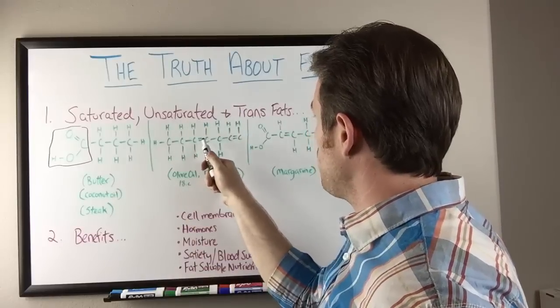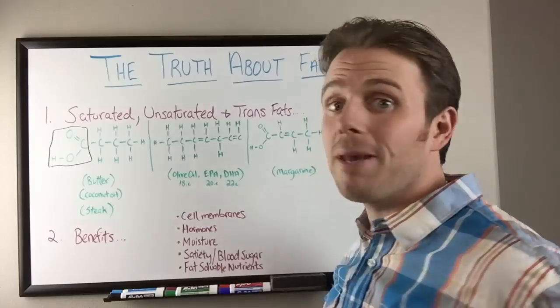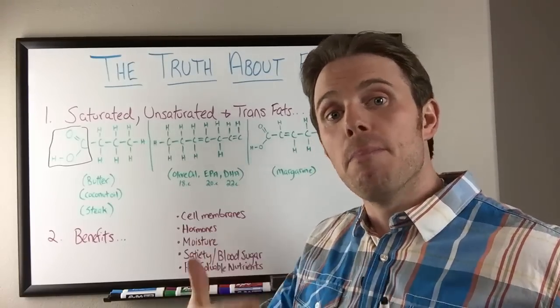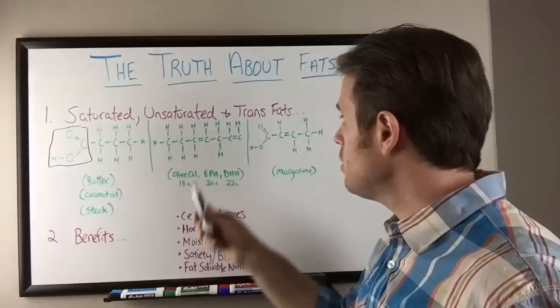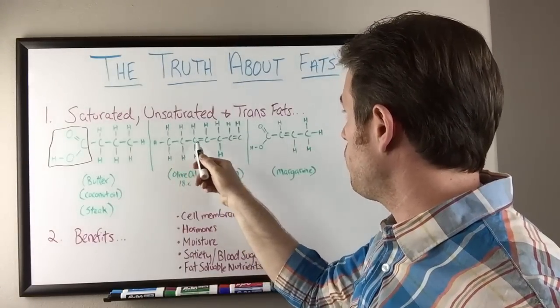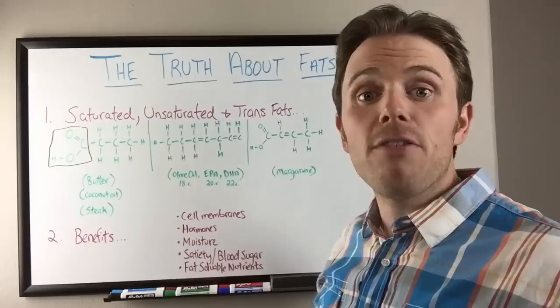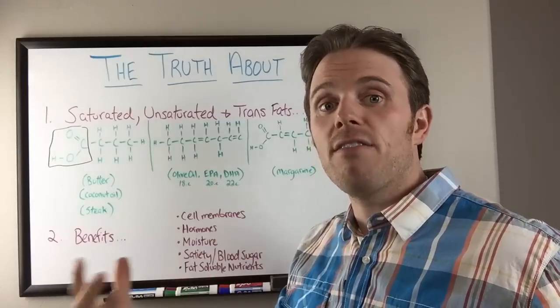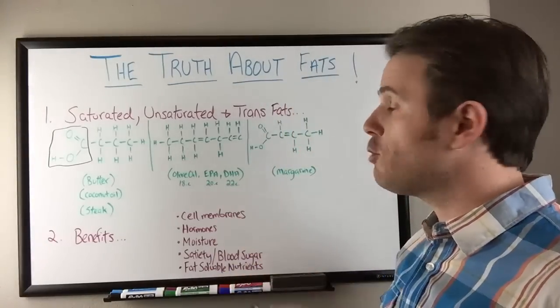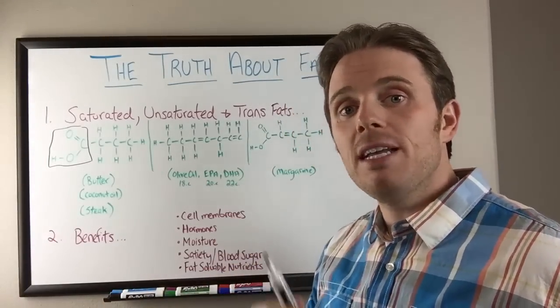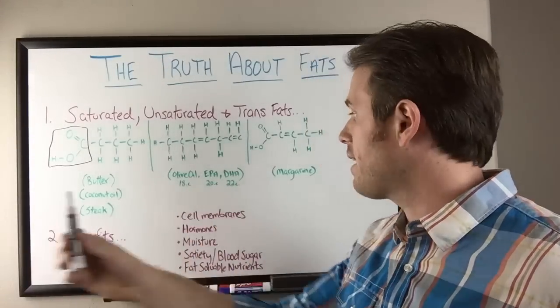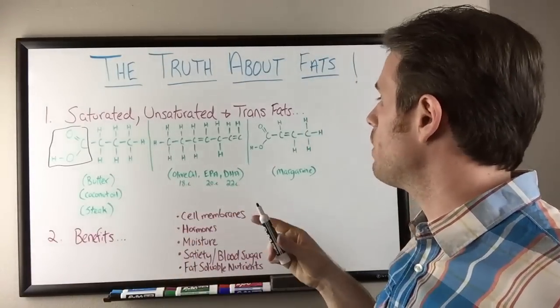Now as soon as we start going into multiple double bonds, now it becomes a polyunsaturated. All poly means is many unsaturated bonds. So you can see now we have two. And if we strung up, again, 20 carbons with this pattern right here, that would be fish oil or the primary fat in fish oil. It's known as EPA, eicosapentaenoic acid. If we strung up 22 carbons, that would be DHA, not DHEA, but DHA, docosahexaenoic acid, which is 22 carbons long.